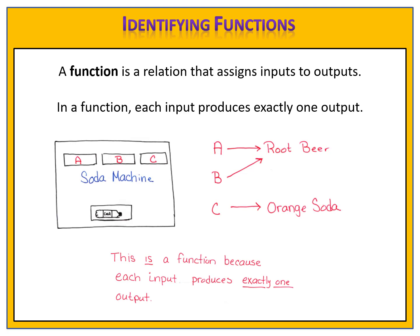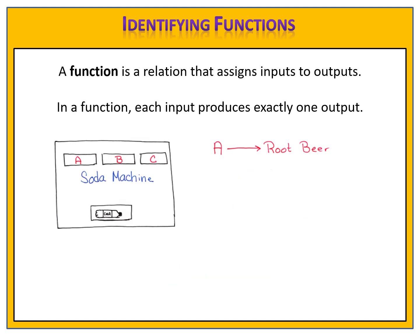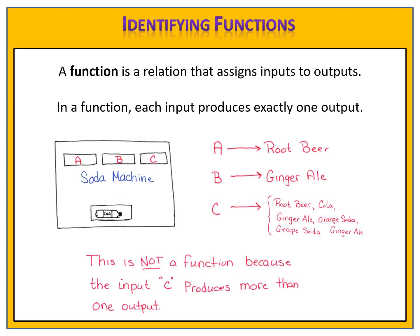But suppose something funky happens. Suppose we have button A as a root beer and button B as a ginger ale. But something strange happens with button C. When you press button C the first time, you got a root beer. You pressed it again, you got a cola. Pressed it again, a ginger ale. The next time, an orange soda. You tried it again, and you got a grape soda. Press it one more time, you got a ginger ale. Each time you pressed button C, you got a different output. This is not a function because the input C produces more than one output.